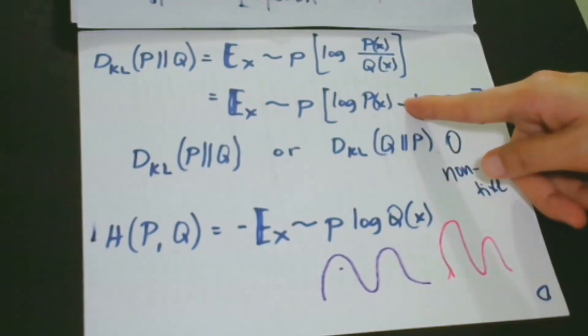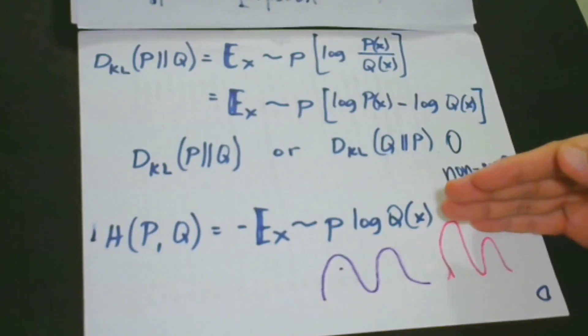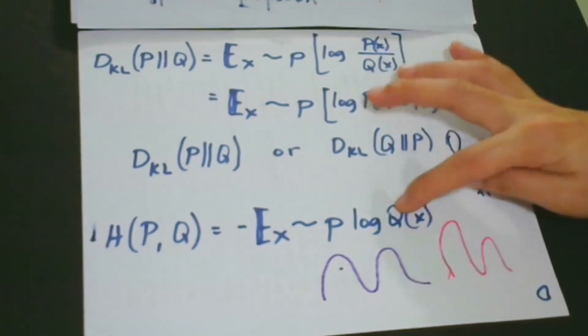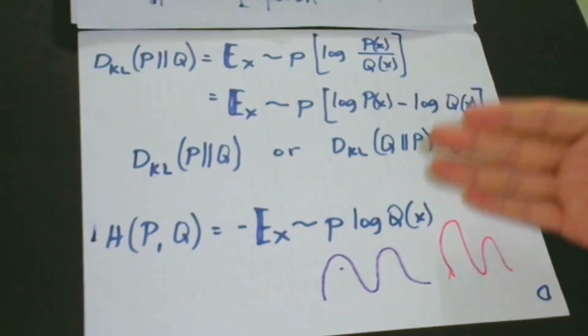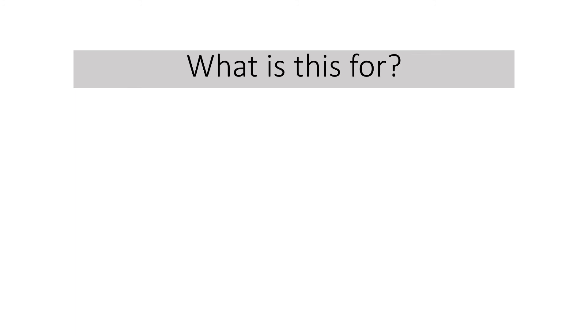So in this case, we minimize the KL convergence by minimizing the cross-entropy with respect to Q. And the reason is Q does not have any effect or participation in P, which is the omitted term. What is this for? Why do we have to study this?